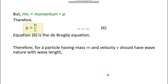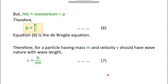Therefore, for a particle having mass m and velocity v, it should have wave nature with a wavelength. Lambda equals h/p, or instead of p you can write mv. This is equation number 7.